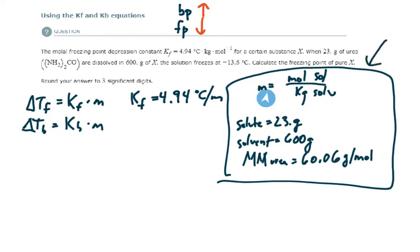And I also wrote our other givens here. It includes the formula for molality, the mass of our solute, the mass of our solvent, and the molar mass of urea, which is our solute here. So they ask us to determine the freezing point of pure X.